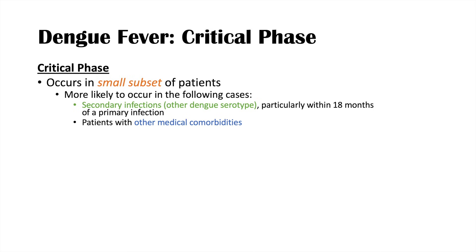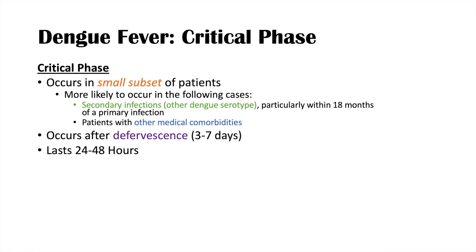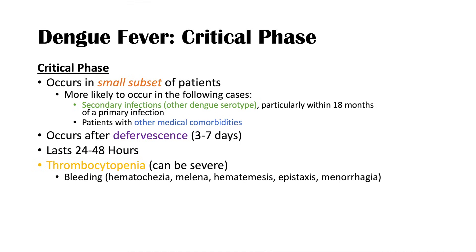The critical phase is also more common in patients with medical comorbidities. It features severe thrombocytopenia — platelet counts even below 20 — leading to increased bleeding risk. This includes hematochezia, melena or black tarry stool, hematemesis or vomiting blood, epistaxis or nosebleeds, and even menorrhagia. These symptoms are collectively referred to as dengue hemorrhagic fever, though this term is used less commonly today.